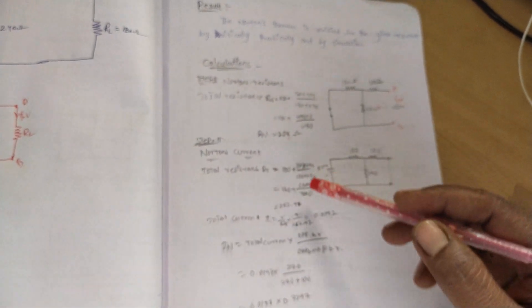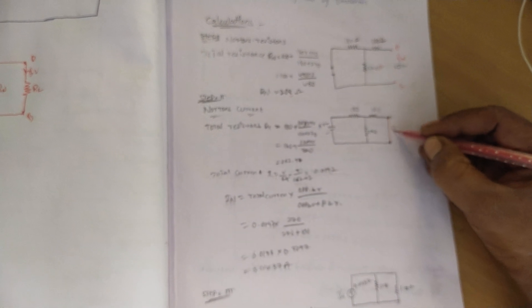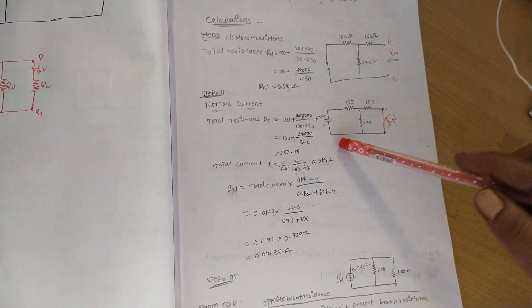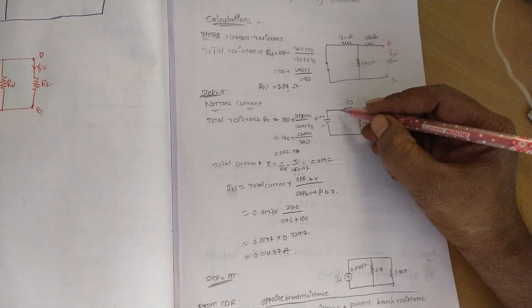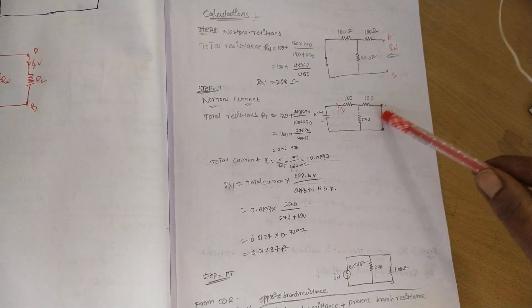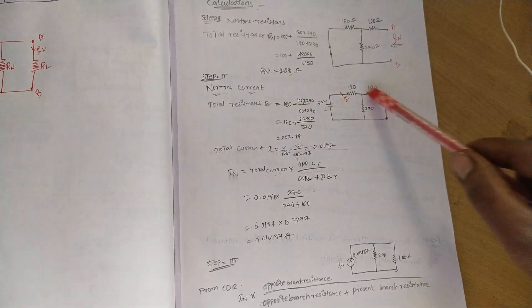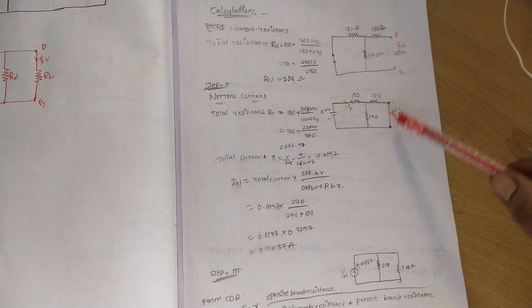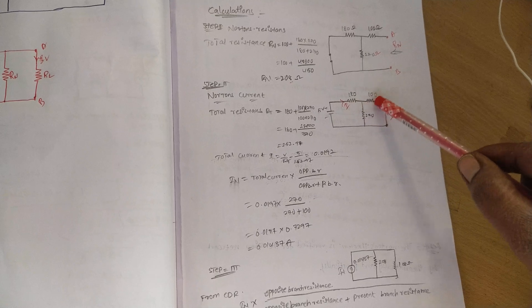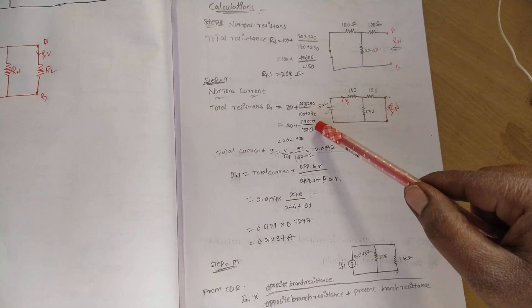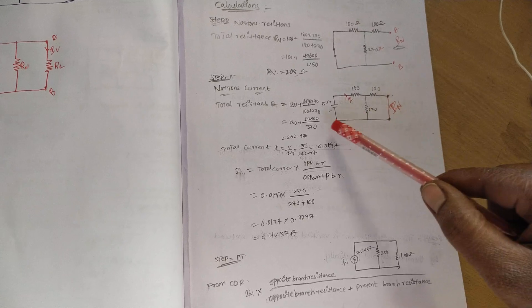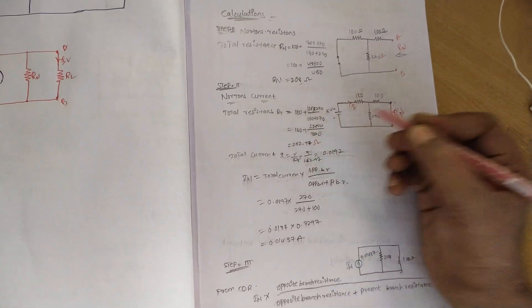In step two we are calculating Norton's current. To calculate Norton's current IN, we short circuit the load resistance. After short circuiting the load terminals, the total resistance of the circuit is 180 ohm in series with the parallel combination of 100 ohm and 270 ohm, that is 100 times 270 divided by 100 plus 270. The total resistance is 252.97 ohm.